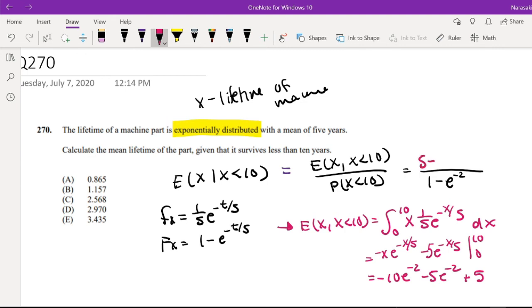So this equals 5 minus 15 e to the negative 2, divided by 1 minus e to the negative 2. Let me type that into my calculator. This equals 3.43, which is answer E.